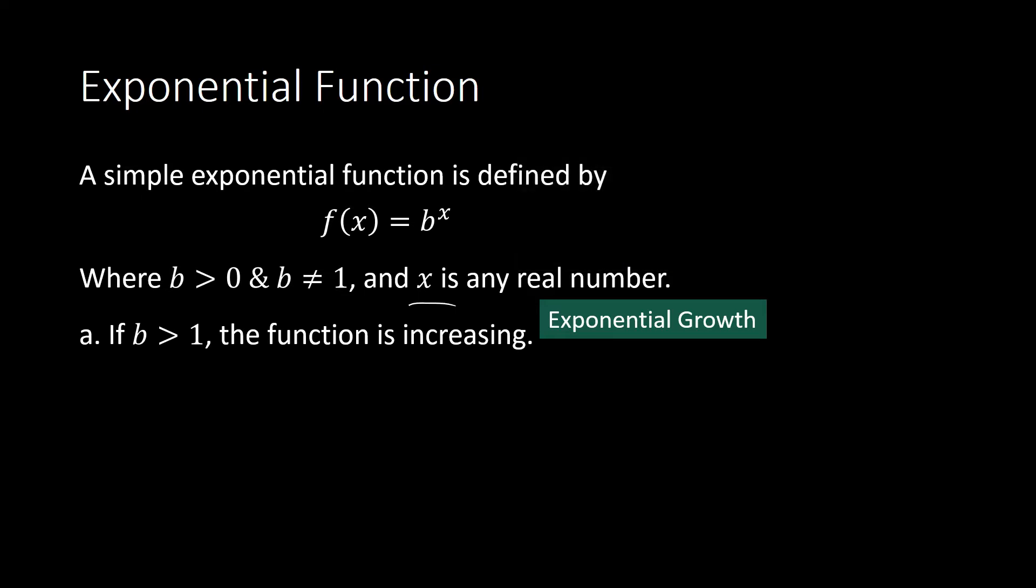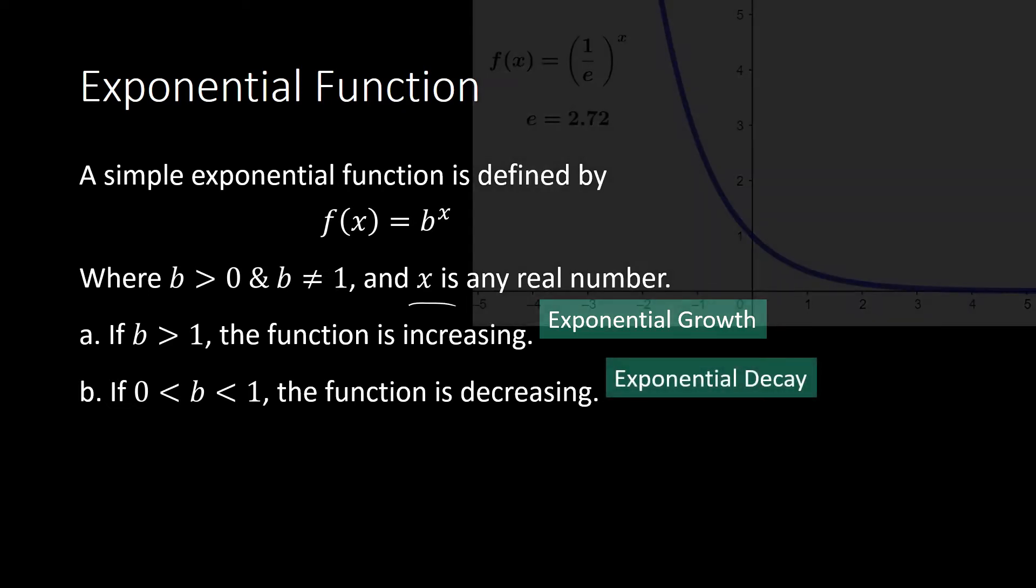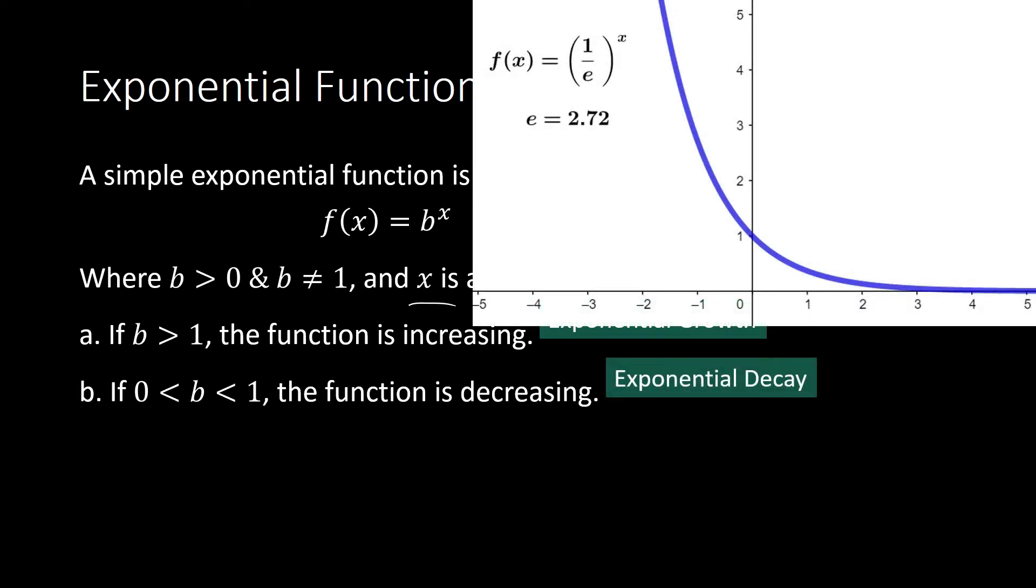If b is between 0 and 1, the exponential function is decreasing, and this is what we call Exponential Decay. This is the graph of our exponential function when base is equal to 1 over e. It is a decreasing function.